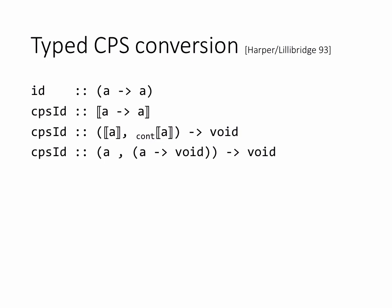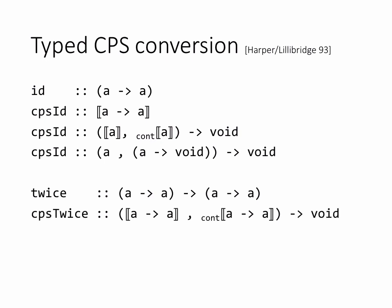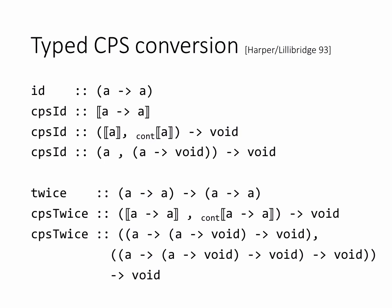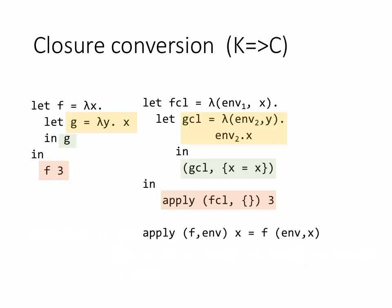For more complicated functions, the same type translation applies — the types just get longer. But it all works out: you can prove that if something type-checks in System F, and then you do the CPS translation, the result will have the type given by this translation. The translation is compositional and provably type-preserving.